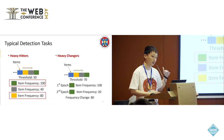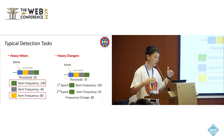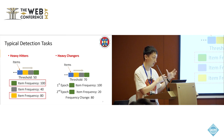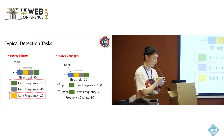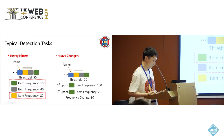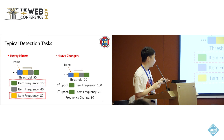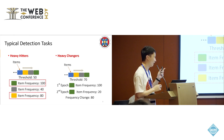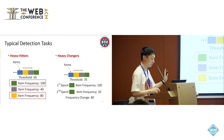And if we divide the data stream into different time windows, for items that have a dramatic frequency change in adjacent time windows, we consider these items heavy changers. For instance, if the green item's frequency in the first epoch is 100 and in the second epoch is 20, it has a change of 80, which exceeds the threshold, so this item is a heavy changer.